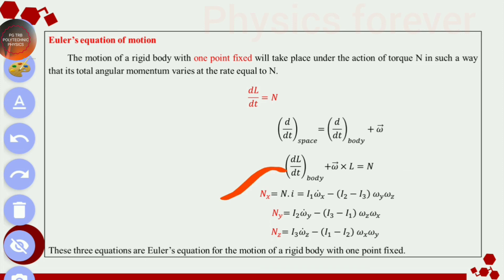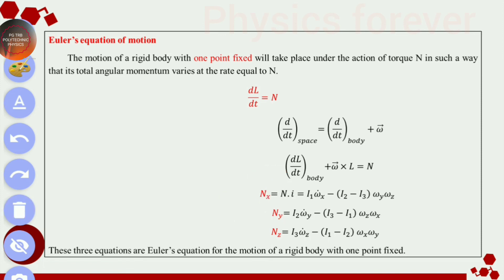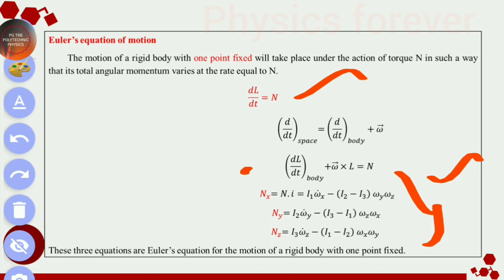Writing the x, y, z coordinates: I1 * omega_x_dot minus (I2 minus I3) * omega_y * omega_z equals n_x, and similarly for the other components. These three equations are the most important — they are called Euler's equations of motion.